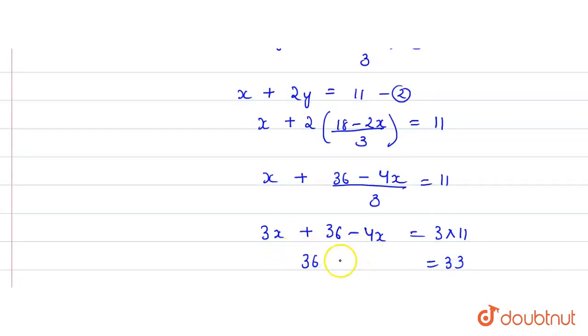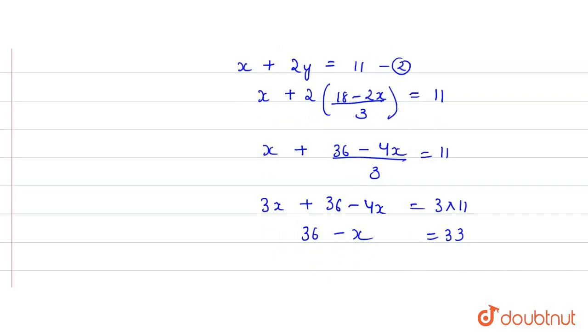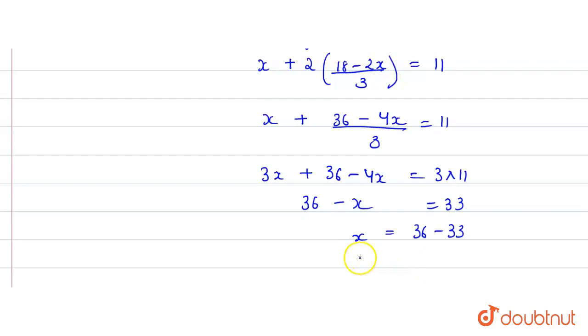3x minus 4x is minus x, so -x = 33 - 36, which gives x = 3 rupees.